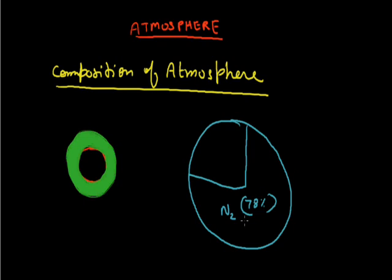Nitrogen is very light gas so basically it is found in the upper part of the atmosphere. Second important gas is oxygen which is 21% of the total gas.